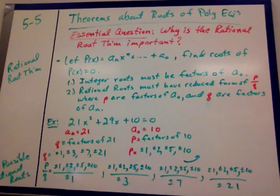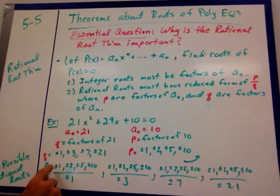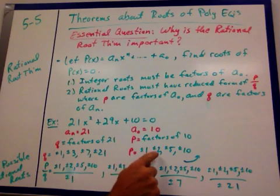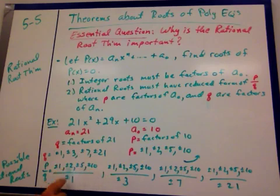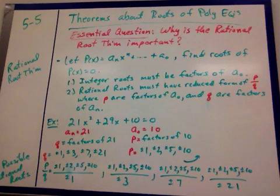Factors of 10: 1 and 10, 2 and 5, plus or minus. So p over q is going to be each of these p's, 1, 2, 5, and 10, plus or minus all over 1, then all over plus or minus 3, then all over plus or minus 7, then all over plus or minus 21.